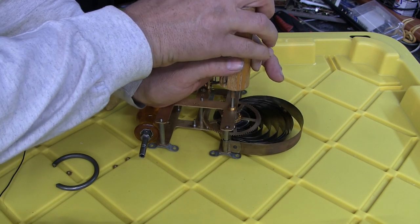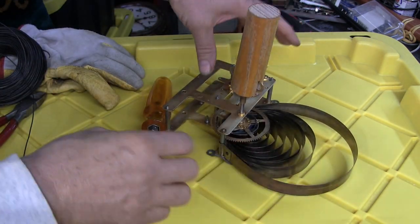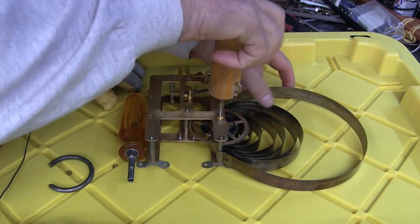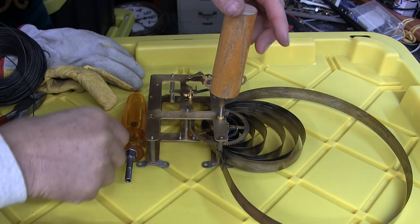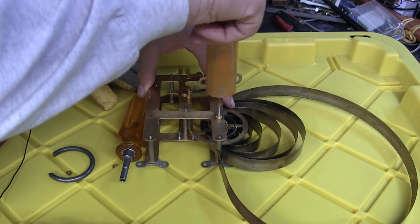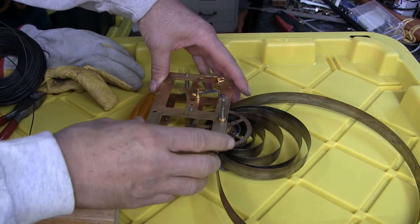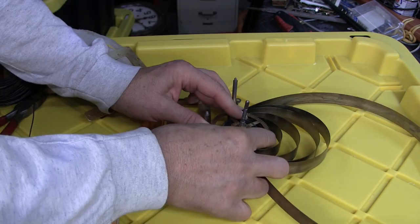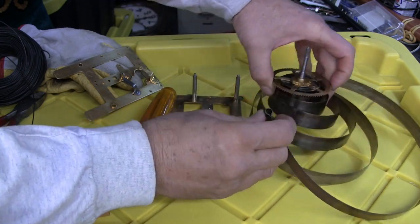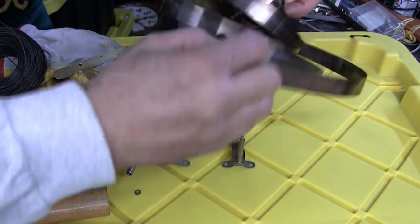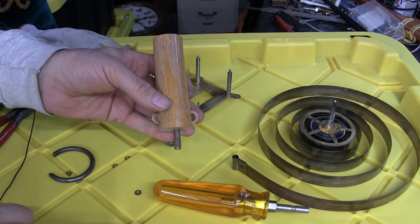Some springs are more powerful than others. It all depends on your clock. But you just want to make sure it's all the way down. Then if you don't have your retaining clip, you just lift it straight up, see? And now your spring is out.